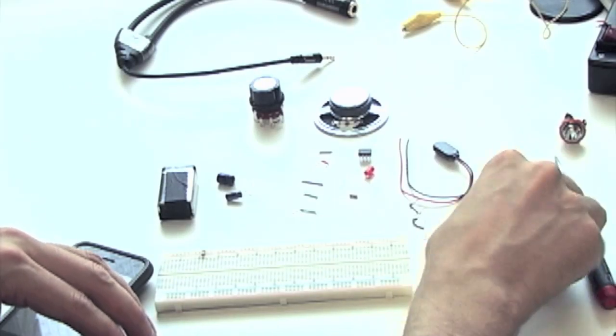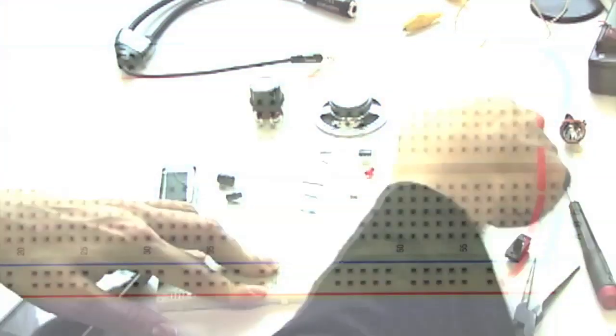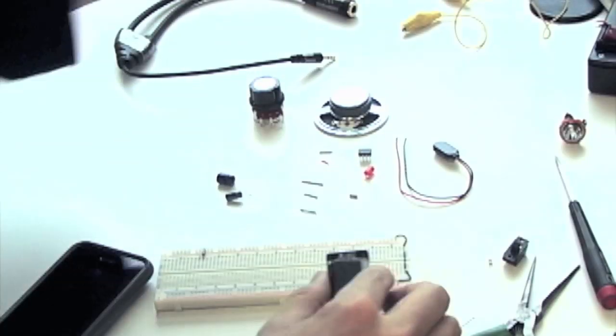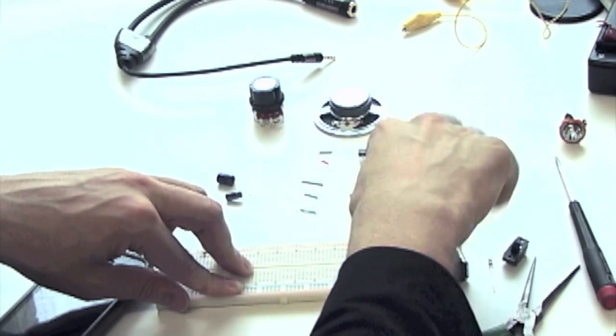Begin by bridging the voltage and ground rails on your breadboard. The battery clip can then be connected to the battery, and the leads can be connected to the corresponding rails.